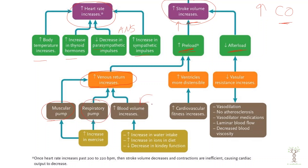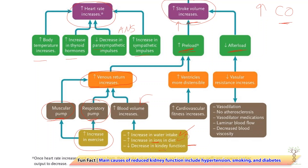We can also increase preload by increasing blood volume. If you drank a big glass of water, you'd have more blood volume and more venous return. How do we increase blood volume? Drinking water. If we increase ions in our diet — for example eating salty food — it would make you retain a bit more water, your kidneys would excrete less, and it would also make you thirsty so you'd drink more water. If anyone had kidney problems, they would not be able to excrete enough water, so kidney function can affect your overall blood pressure.